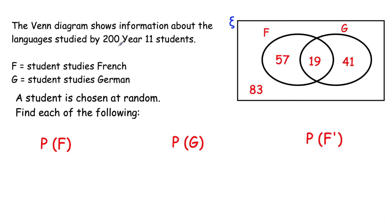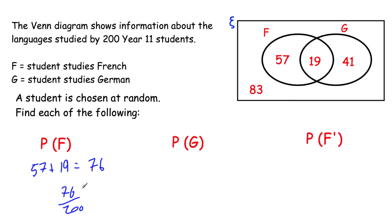We have a Venn Diagram showing languages studied by 200 students in Year 11 — some study French, some study German, some both, and some neither. F represents students studying French, G represents students studying German. A student is picked at random. To find P(F): there are 57 who study only French and 19 who study both, so 57 plus 19 equals 76. The probability of studying French is 76/200, which simplifies to 19/50.